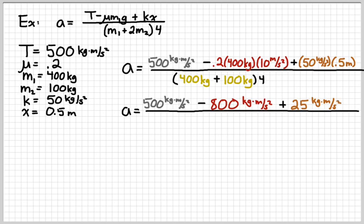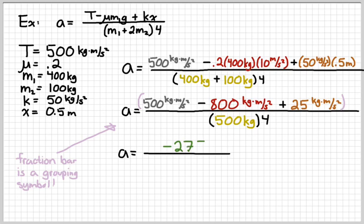So, I'm going to multiply everything in the second term on top and the third term on top. It should look like that. A kilogram times meter per second squared is a kilogram meter per second squared. A kilogram per second squared times a meter gives you the same thing. And then go ahead and add up the 400 plus 100 kilograms in parentheses like that. Now, remember that the fraction bar is still a grouping symbol.